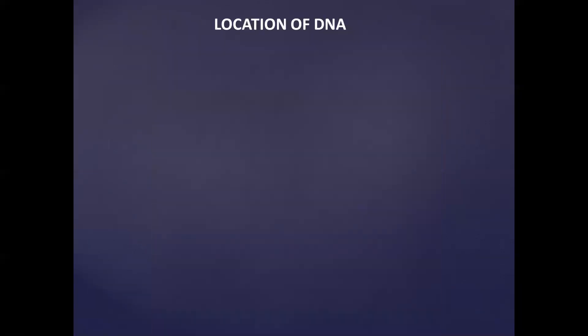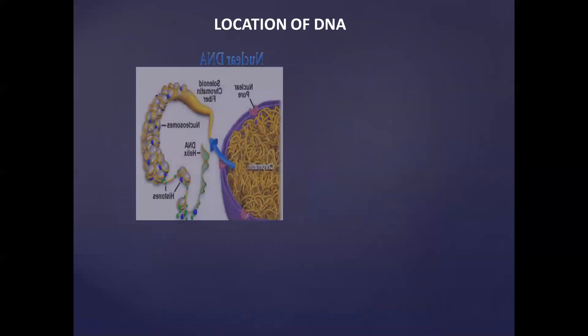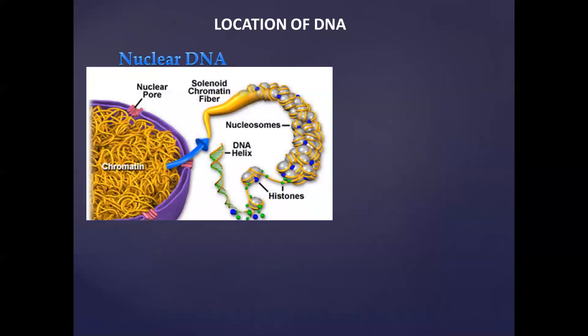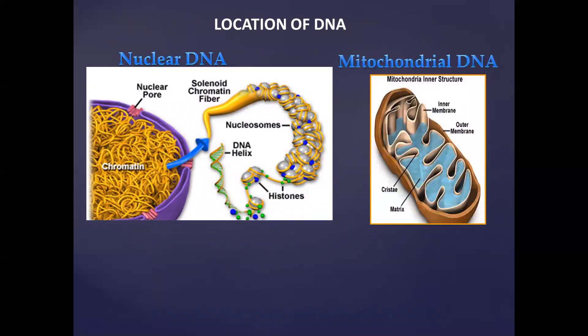So, the location of DNA — where is DNA found? There are two places in which we find DNA within animals. The majority of DNA is found within the nucleus, known as nuclear DNA. We also find DNA within the mitochondria, known as mitochondrial DNA.